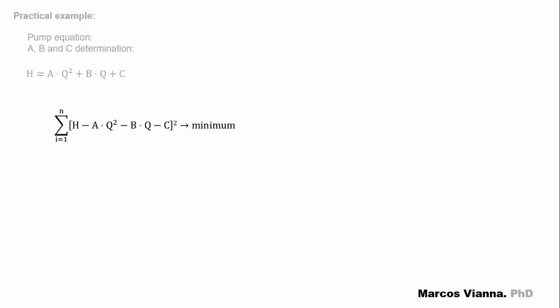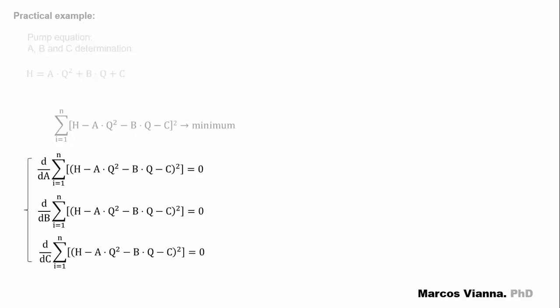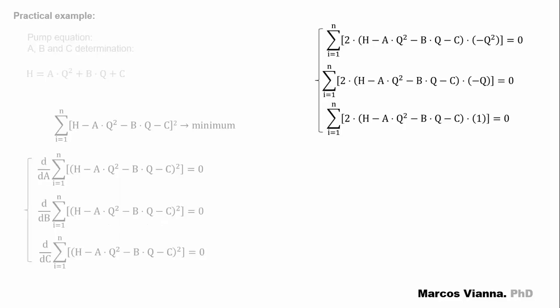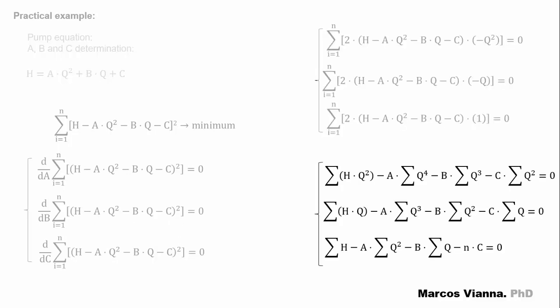So, this is what we want. This summation must be at a minimum, which means that each one of these derivatives must be equal to zero. When we differentiate them, we find this, that we can rewrite in this form.